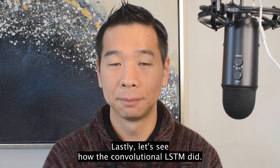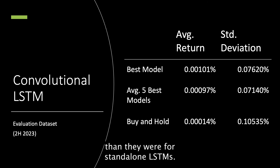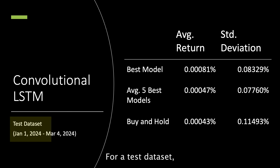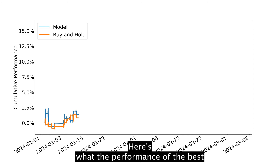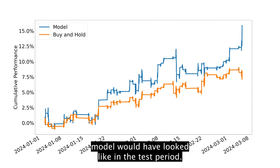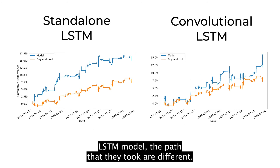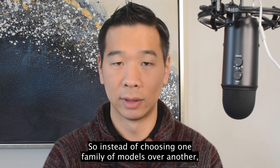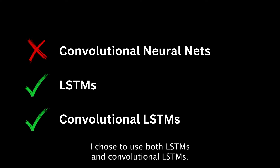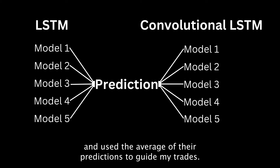Let's see how the convolutional LSTM did. For the evaluation dataset, the average returns are higher than they were for standalone LSTMs, although those returns came with slightly higher risk. For the test dataset, the average returns are similar to what we saw with LSTMs, albeit with slightly higher risk again. Although the overall performance is similar to the LSTM model, the paths they took are different, suggesting the models detect different signals from the data. So instead of choosing one family of models over another, I chose to use both LSTMs and convolutional LSTMs — specifically, the five best LSTM models and the five best convolutional LSTM models — and used the average of their predictions to guide my trades.